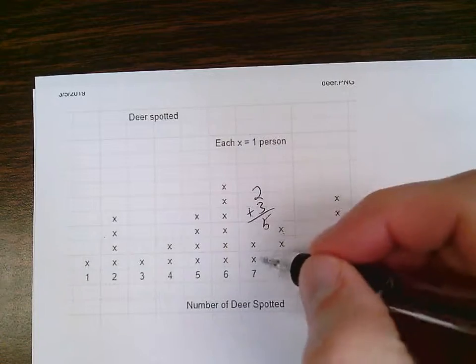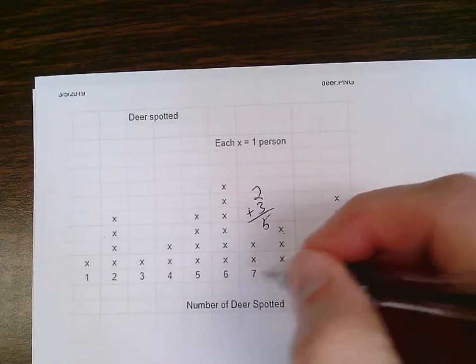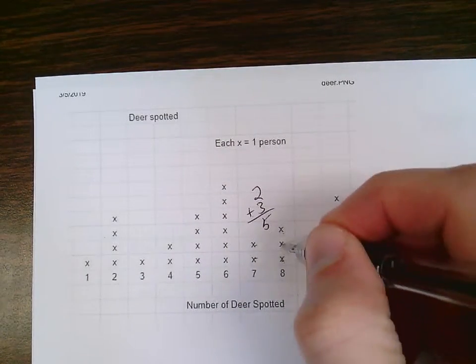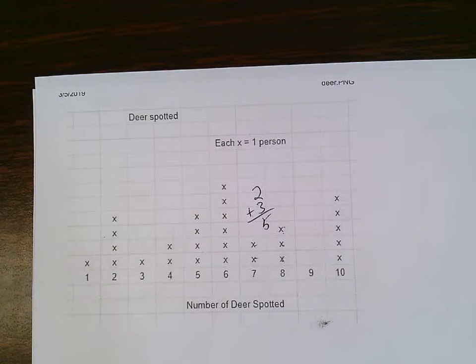I also could just count them up. I can count up all the ones above seven and eight: one, two, three, four, five. So five people saw a combined seven or eight deer.